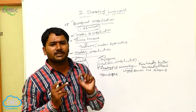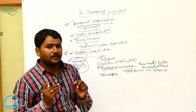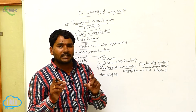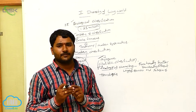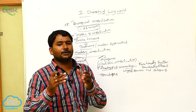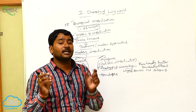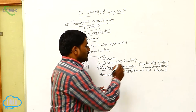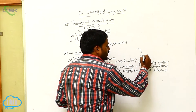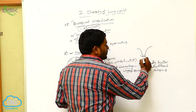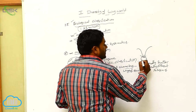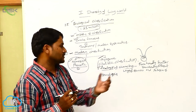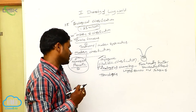Convergent evolution occurs when two different individuals are kept in a single habitat and adapt to that habitat, developing similar functional organs. So two different organisms coming into the same habitat will develop similar functional organs — that is convergent evolution.